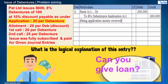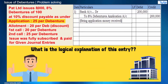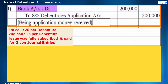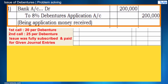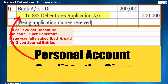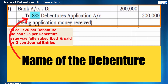Let's say we ask for a loan from the lenders in the market. So they will first give us the money. The bank account is debited, following the rule of the real account. And since the lenders are giving us money, they will be credited in the 8% debenture application account, following the rule of the personal account — credit to the giver.